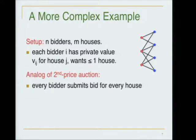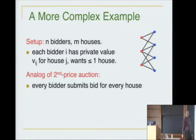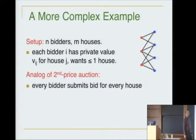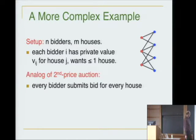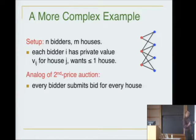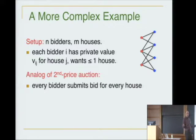What do I mean by harder allocation problems? Instead of one good, let's think of many goods. Imagine a bunch of houses on the market and a bunch of people looking to buy — different people have different preferences, and no one wants more than one house. In this graph, three bidders on the left, four houses on the right, each bidder has value v_ij for house j. Can we have an analog of the second-price auction for this richer allocation problem?